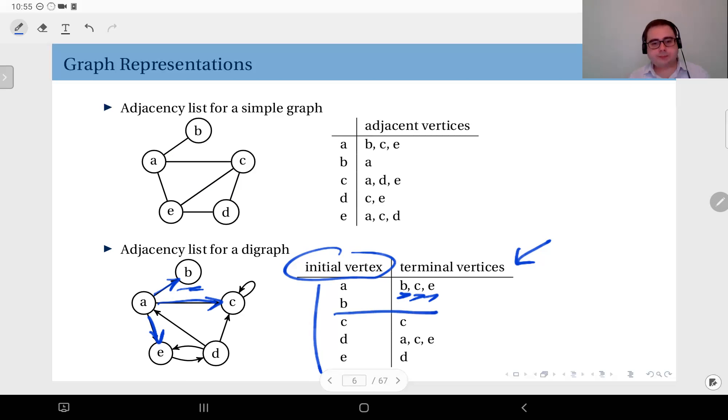When you look at c, the only edge incident to c where c is the initial vertex is this loop, therefore in my list I only see c. You can fill in the rest of the list in a similar fashion. From d you have a, e, and c, and from e you have just d.